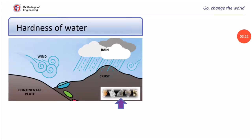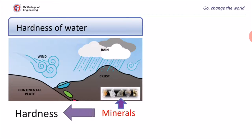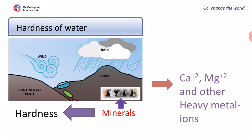Hardness of water is a characteristic property of water which does not give lather when treated with soap solution. When rainwater comes in contact with minerals present in the earth's crust, those minerals impart hardness. These minerals generally contain calcium and magnesium salts and other heavy metal ions, which are responsible for hardness.